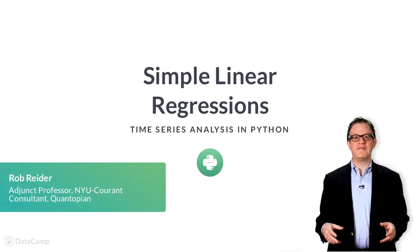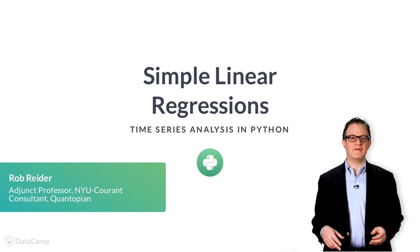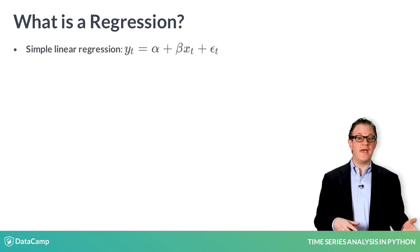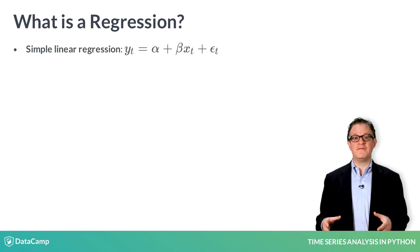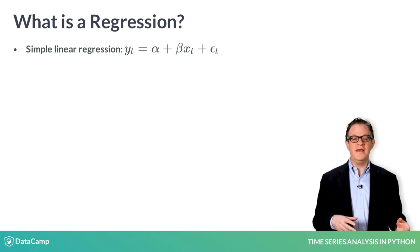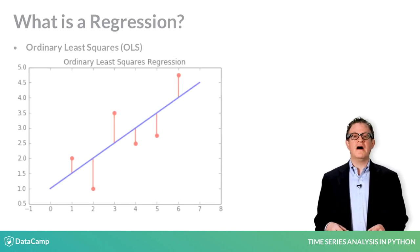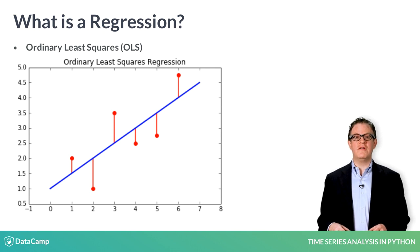In this video, you'll learn about simple linear regressions of time series. A simple linear regression finds the slope beta and the intercept alpha of a line that's the best fit between a dependent variable y and an independent variable x. The x's and y's can be two time series. A linear regression is also known as ordinary least squares, or OLS, because it minimizes the sum of the square distances between the data points and the regression line.